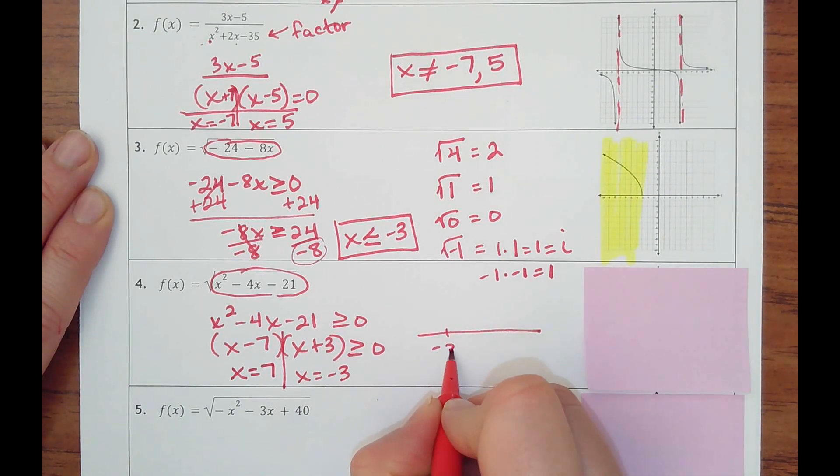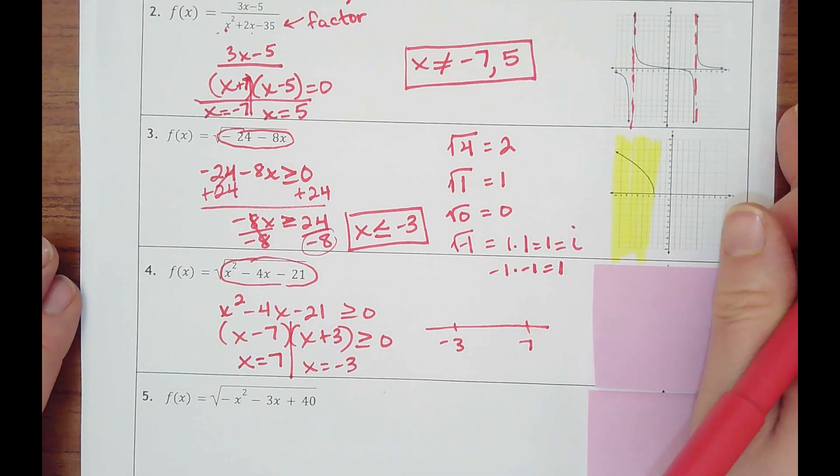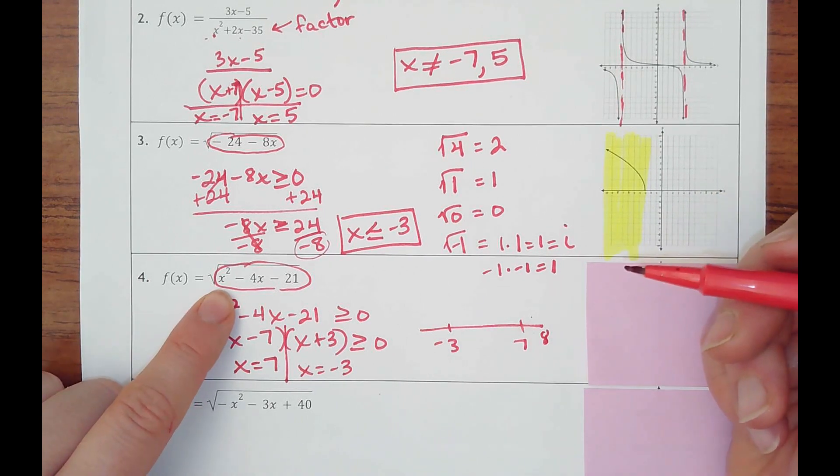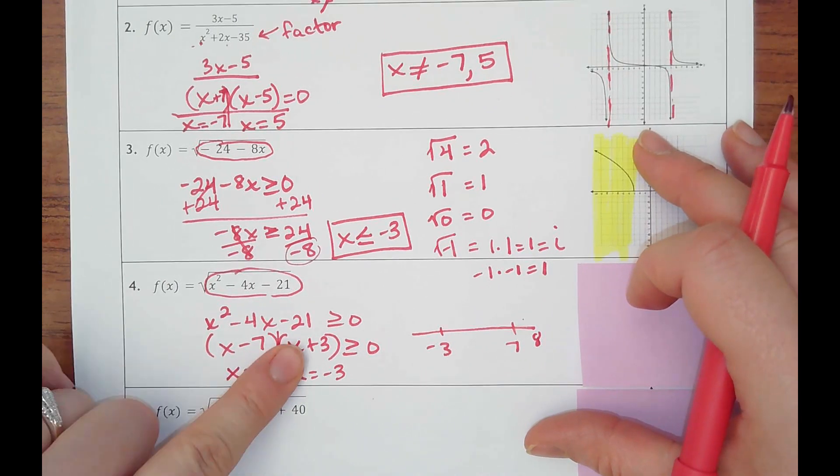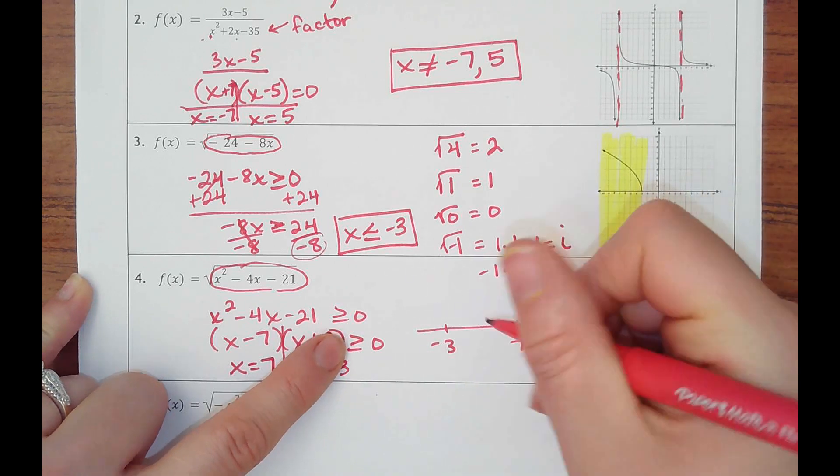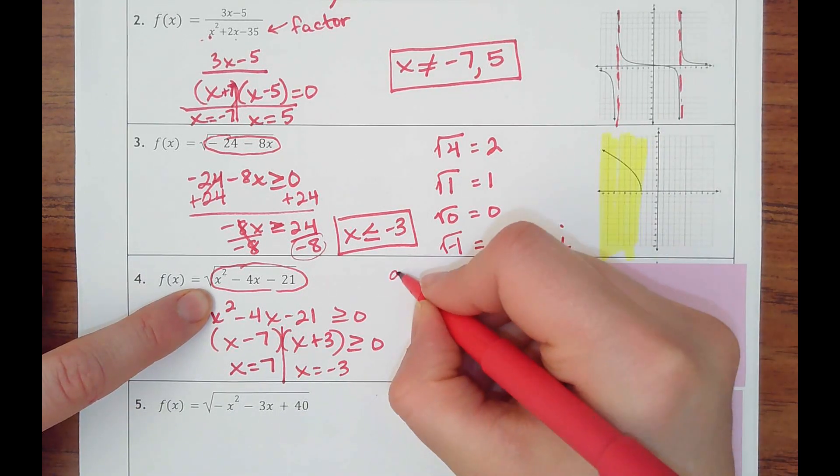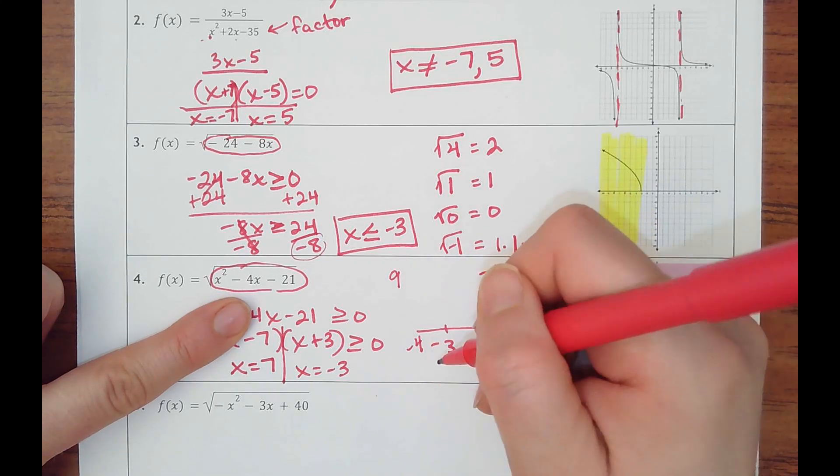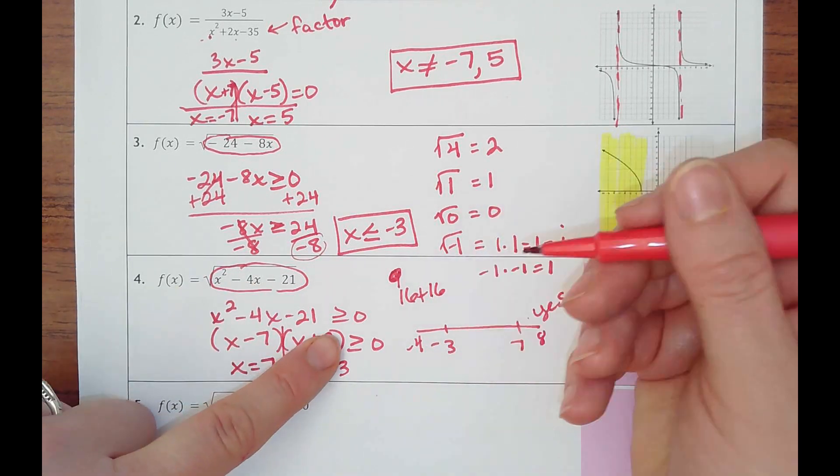But then think of a number line. Negative 3 would be smaller than 7. Again, we need to try numbers to see what happens here. If I were to plug in 8, which would be here, bigger than 7. If I were to plug in 8, and I did 8 squared minus 4 times 8, so it'd be 64 minus 32 is 32 minus 21. I don't even care what that is. But is that going to be a number greater than or equal to zero? Yes. And so what that means is the other outside should work. Let's pick negative 4, because that would be smaller than negative 3. Negative 4 squared would be 16. Negative 4 times negative 4 would be plus 16. That's 32 minus 21. That's going to be greater than or equal to zero. Yes.